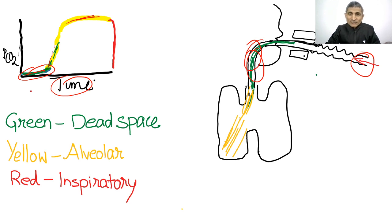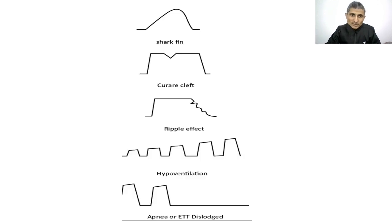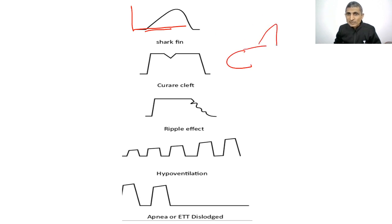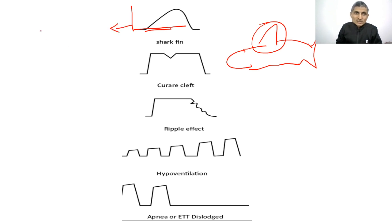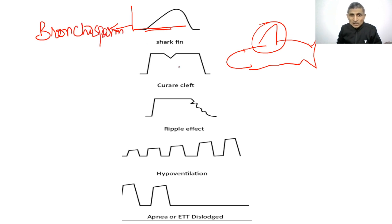Different capnograph shapes correspond to different MCQs. The shark fin appearance — where the graph looks like a shark's fin — is seen in bronchospasm. Another commonly asked pattern in AIIMS and NEET exams is the curare cleft.